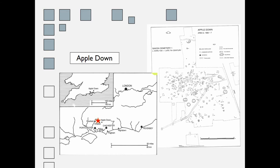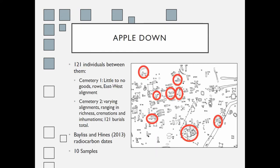The first site I chose was Apple Downs, originally excavated by Downs and Welsh in the 1990s, located near Compton in Chichester County, south-central England. Apple Downs is comprised of two cemeteries containing roughly 120 individuals. Cemetery one represents the later Saxon period with rows of east-west alignment and little to no goods. Cemetery two, where I focused most of my efforts, has varying alignments, ranging richness, cremations, and inhumations, and holds the bulk of all the individuals. This is the largest and most studied of the three cemeteries. Researchers including Dr. Alice Bayless, Dr. John Hines, Dr. May, and Dr. Beaven have previously published three radiocarbon dates and stable isotopes on samples, providing useful parameters for comparing my data.